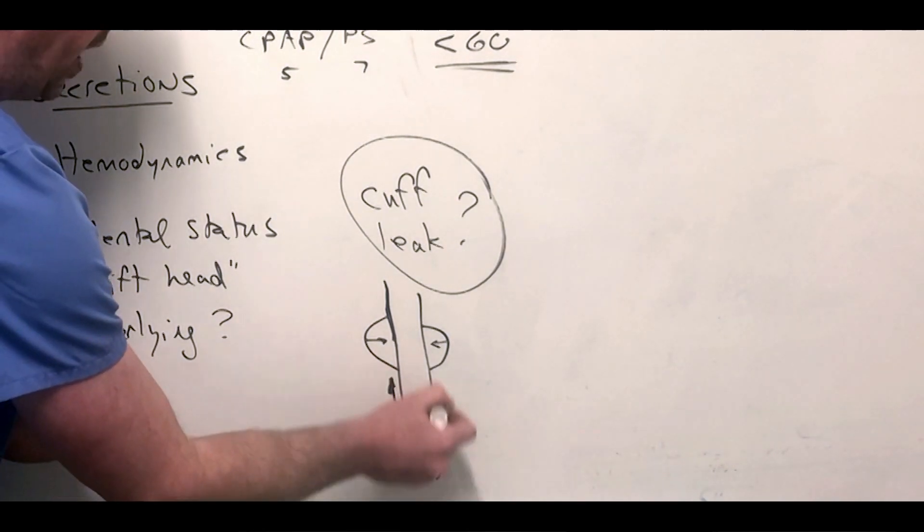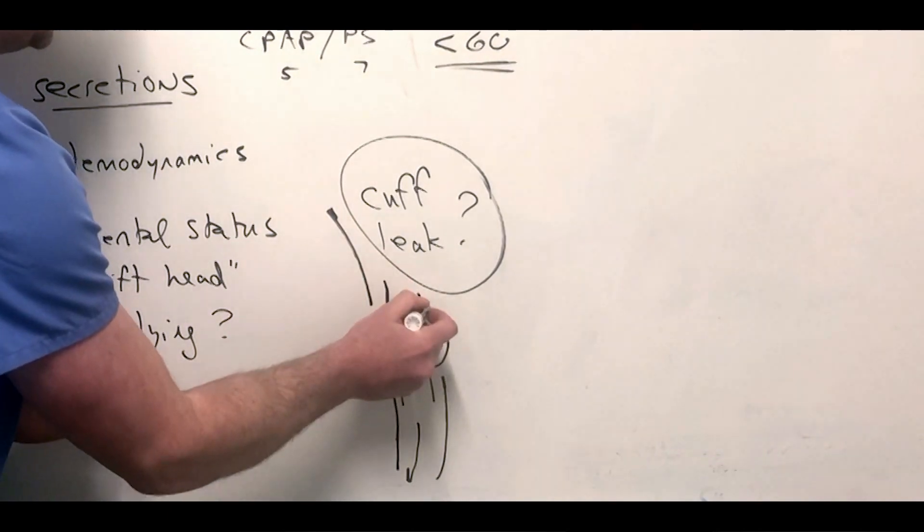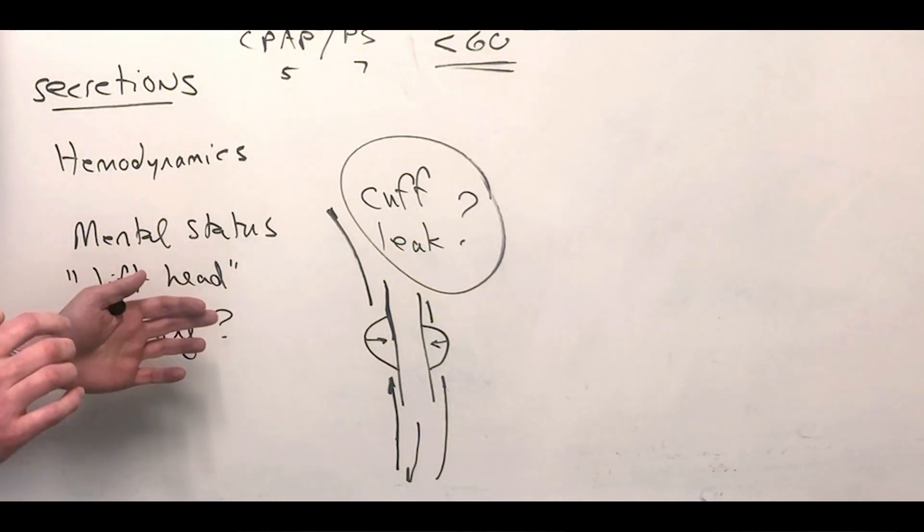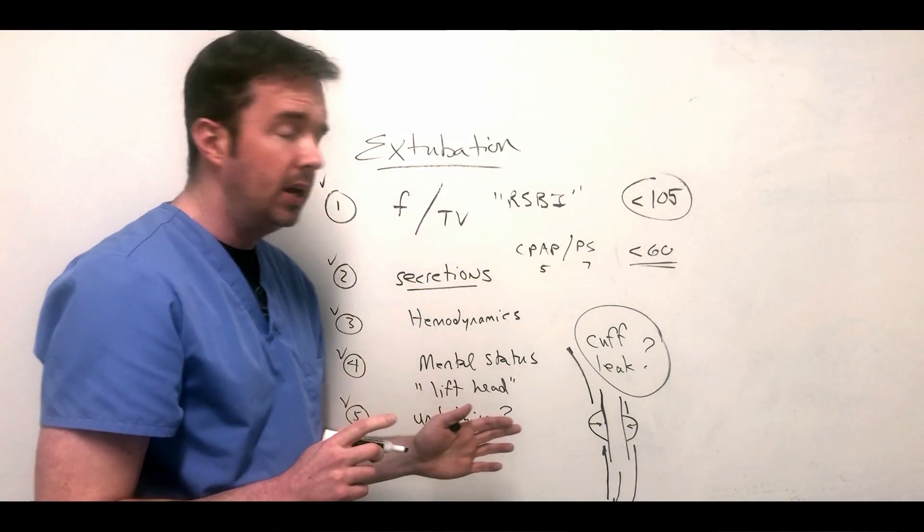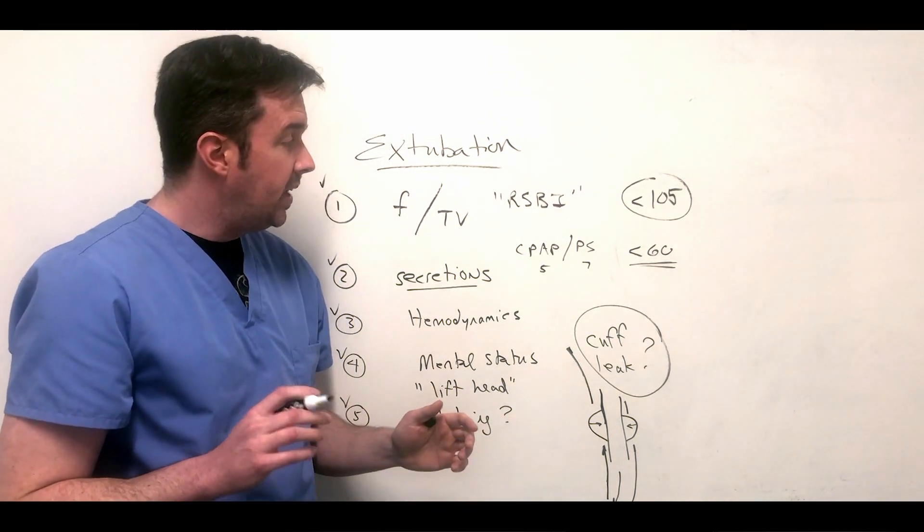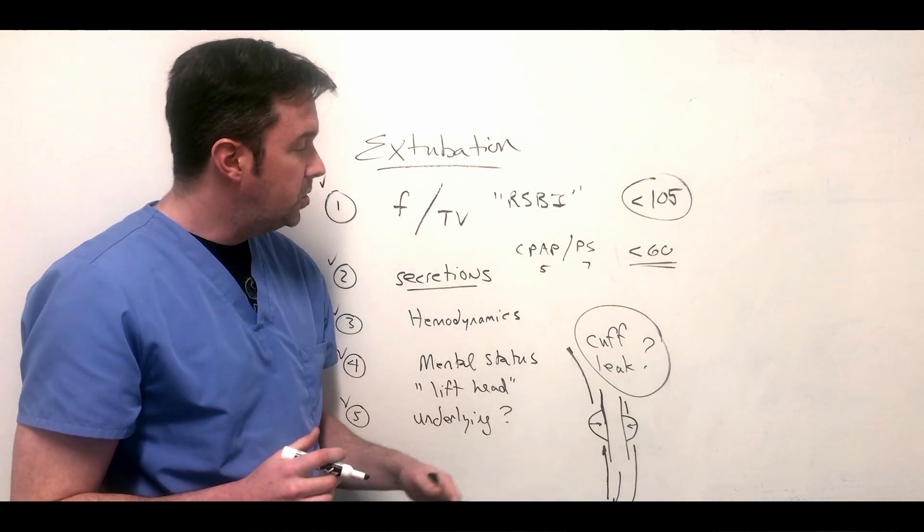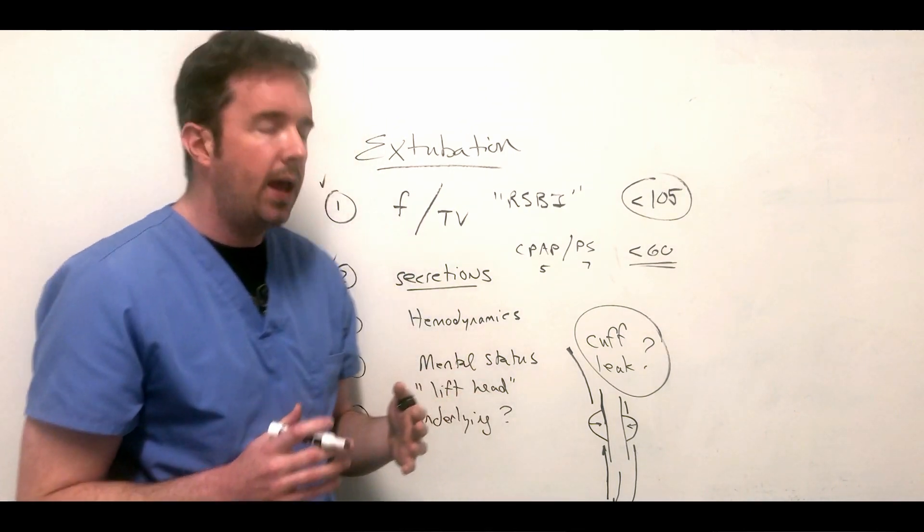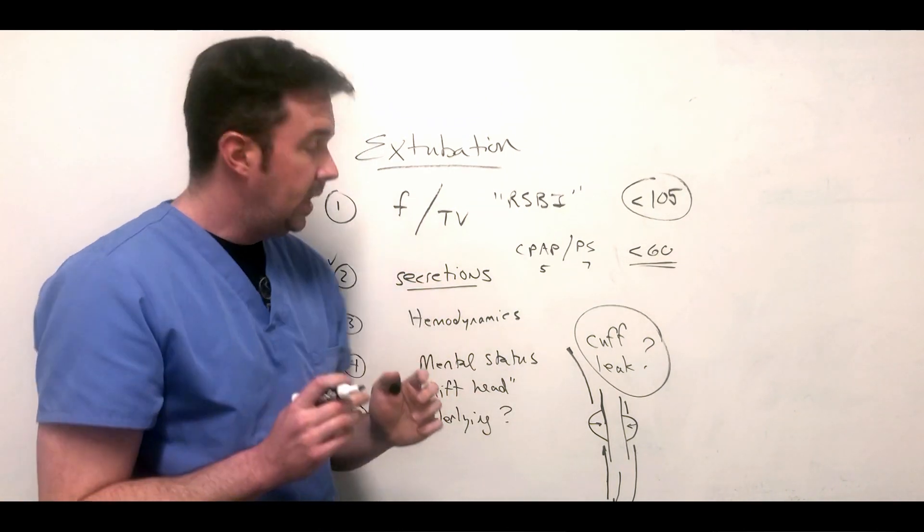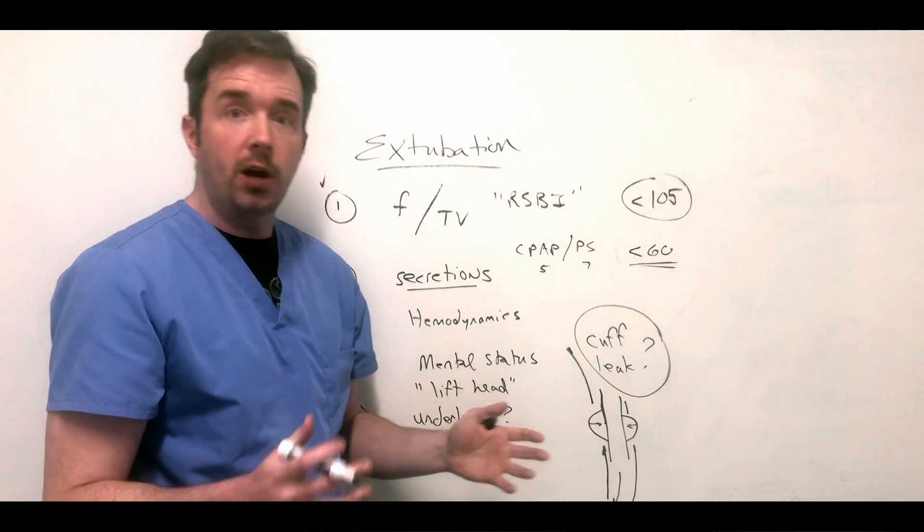We like to see and hear an audible cuff leak - so air is coming into the lungs and then coming back out around the tube and coming out of the patient's mouth. You can see and hear that. Secondly, I look at the ventilator and I want to make sure that the tidal volume that is exhaled drops by at least about a hundred. If I see those two things, I feel pretty good that they don't have bad tracheal edema.